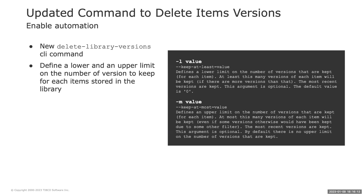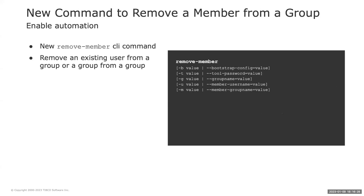When it comes to library item versions, administrators can now define lower and upper limits on the number of versions to be kept for each library item. We also have a new 'remove member' command for administrators, to quickly remove an existing user from a group, or a group of users from another group.